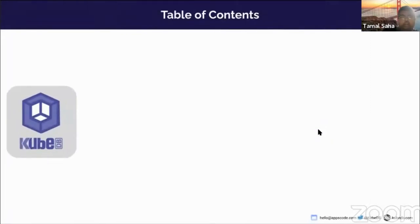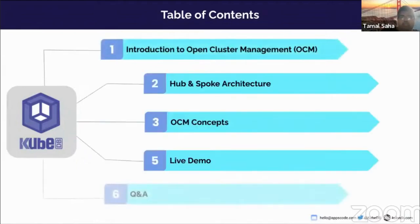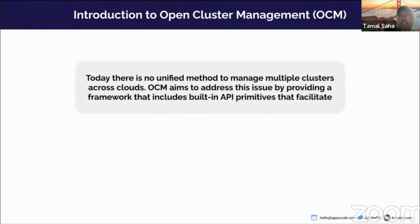The Open Cluster Management project is under development by Red Hat, Alibaba, and many other companies. It focuses on how you can manage a large number of Kubernetes clusters, which could be on the same cloud, multiple different clouds, or on-prem. Today there is no unified way to manage many different clusters across different vendors or providers, and the OCM project tries to provide important API primitives to facilitate these use cases.